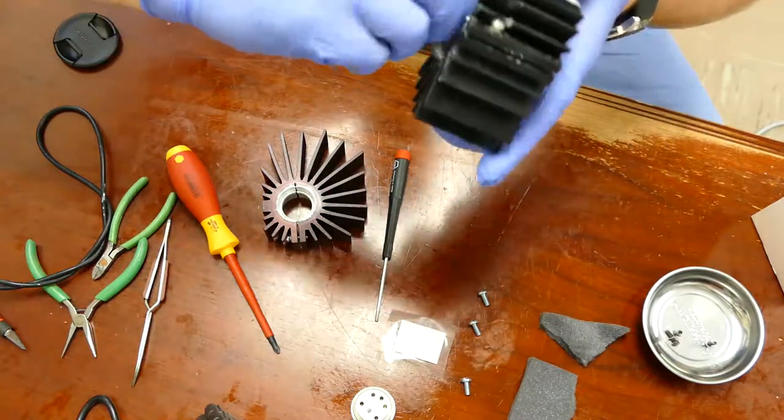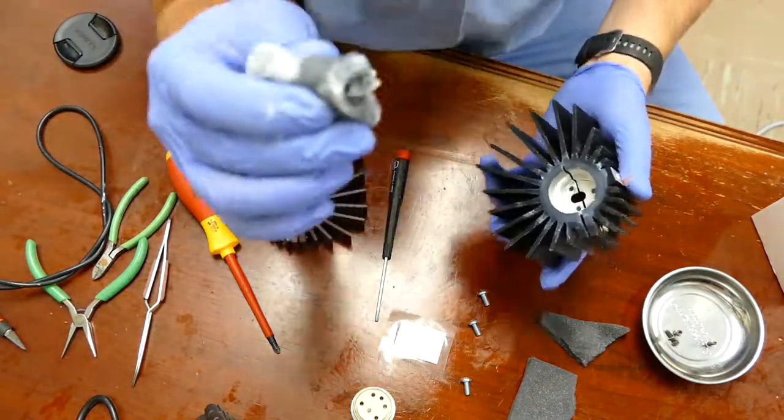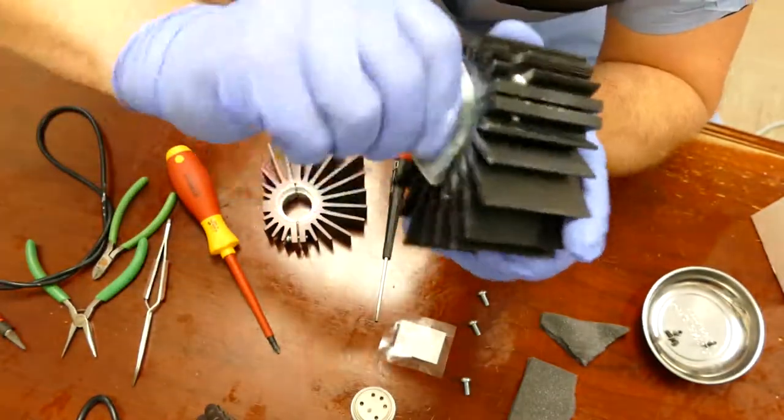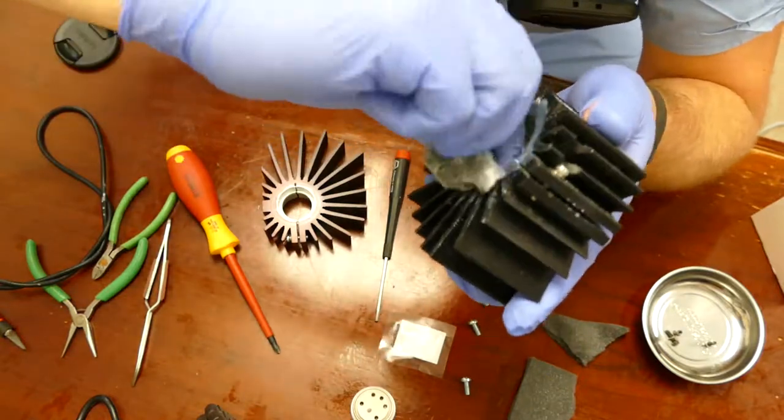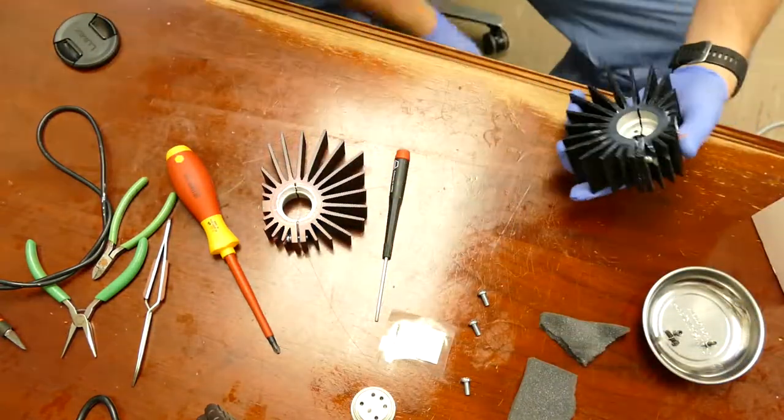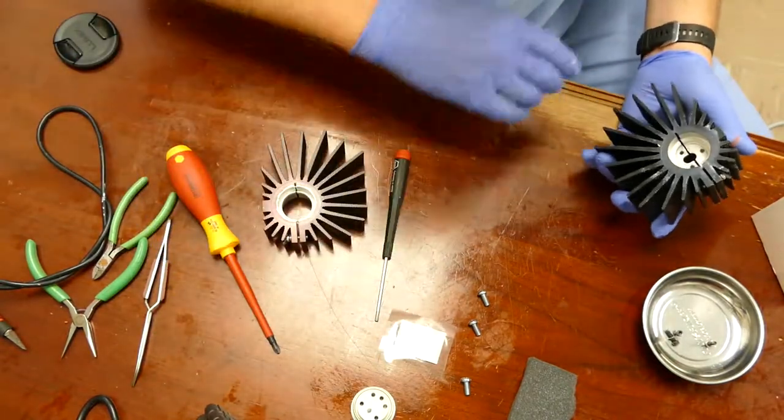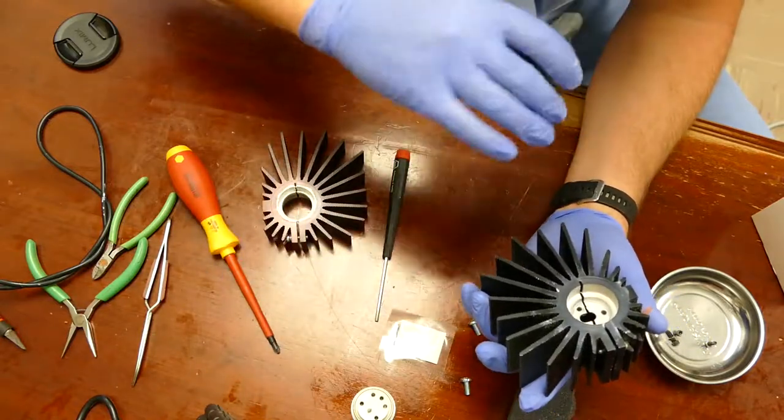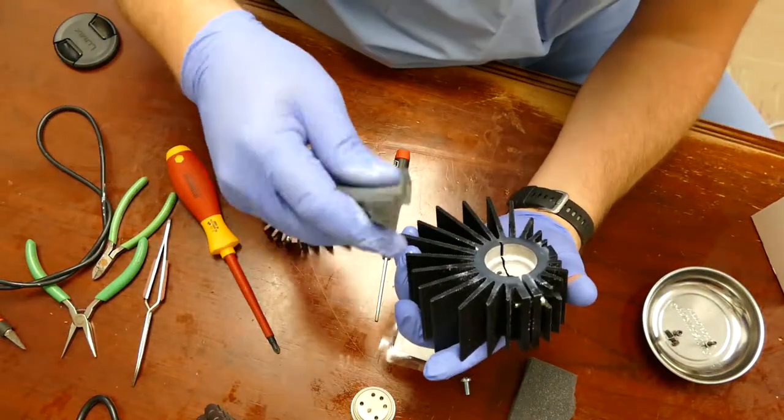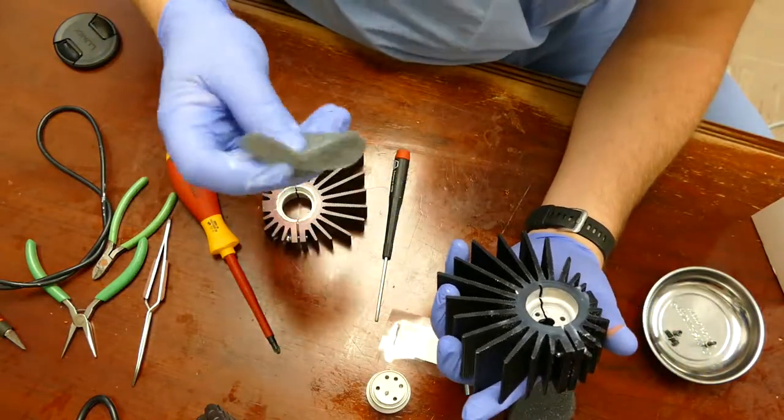You can tell whoever rebuilt this bulb used an abundant amount of that paste everywhere. But because the foam can conform to the lands and grooves down inside this heat sink, it's an excellent source for cleaning those out. Look at that nice clean cavity for the new bulb. Make sure you throw that foam away.